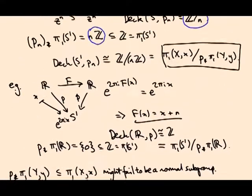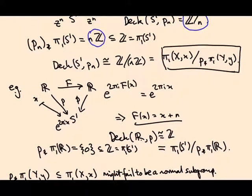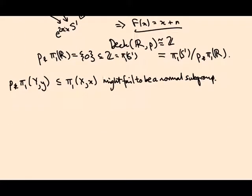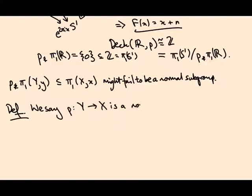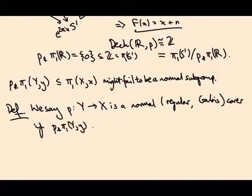So our conjecture that the deck group equals this quotient is not always true — it's true in these examples, and it's true more generally if p★ π₁(y) is a normal subgroup. So by definition, we say y is a normal covering space — sometimes called regular, or sometimes Galois — if p★ π₁(y, ẙ) is normal inside π₁(x, x̊).